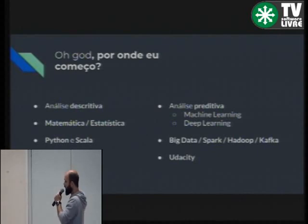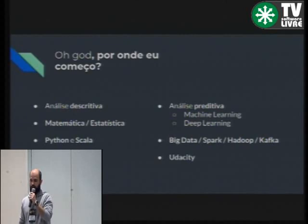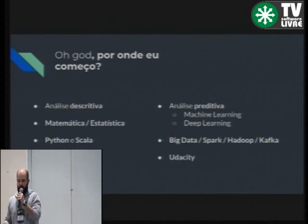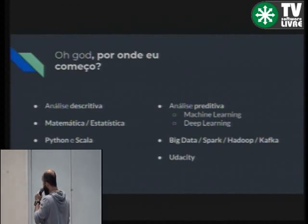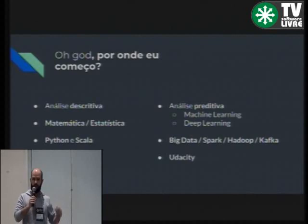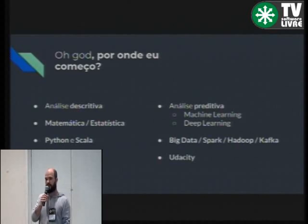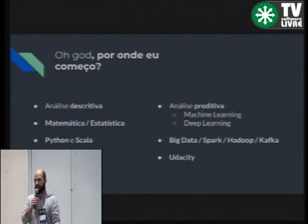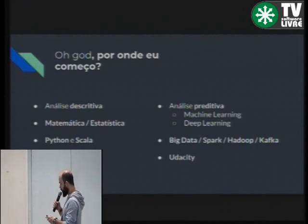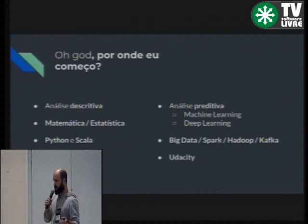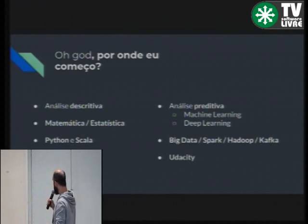O Kafka traz análise em real time — ele é um framework de fila que permite plugar sistema legado com o Big Data. O que geralmente acontece: tu vai construir um modelo num banco como Banrisul ou Itaú, que têm mainframes da IBM de décadas atrás. Tu precisa de tecnologias modernas, então o pessoal acaba recorrendo ao Kafka e ao Spark para conseguir fazer integração de mainframe IBM com tecnologias atuais.